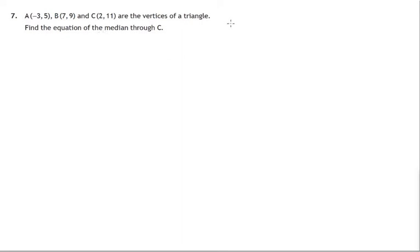So first thing we must do is create a good working diagram. So A is the point negative 3, 5, B is 7, 9 and C is the point 2, 11.